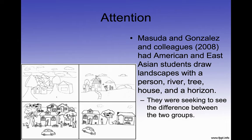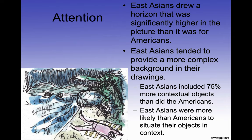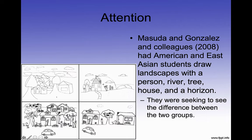Masuda, Gonzalez, and colleagues in 2008 had American and East Asian students draw landscapes with a person, river, tree, house, and horizon, seeking to see the difference between the two groups. East Asians drew a horizon significantly higher in the picture and tended to provide a more complex background in their drawings. East Asians included 75% more contextual objects than Americans did, and were more likely to situate their objects in context.